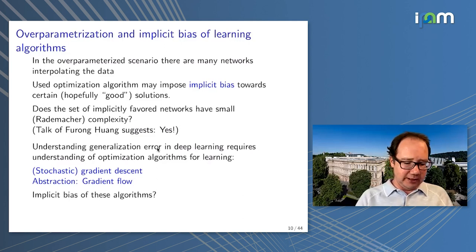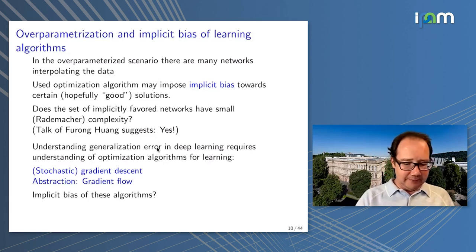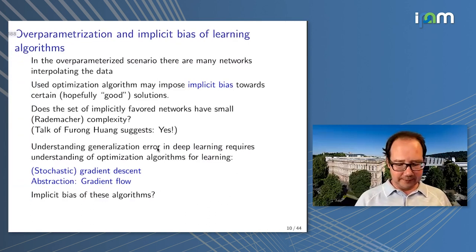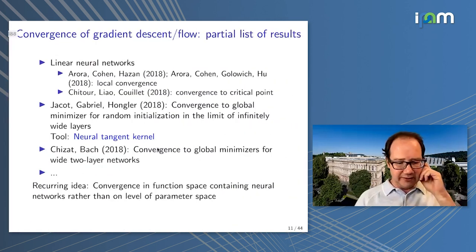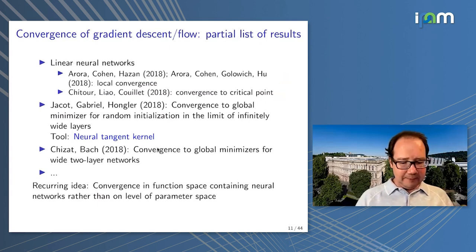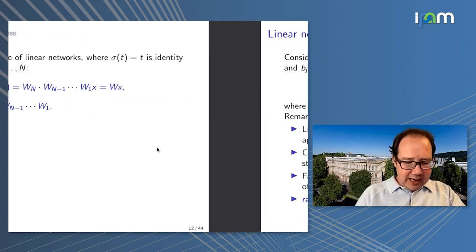Understanding generalization error in deep learning requires understanding the optimization algorithms used — usually gradient descent, stochastic gradient descent, and their variants. For analysis it's also useful to first study the gradient flow, so you don't need to discuss step sizes. The question is: what is the implicit bias of these algorithms? To study this we look at linear neural networks, also called deep matrix factorization. I realized I need to speed up a little.